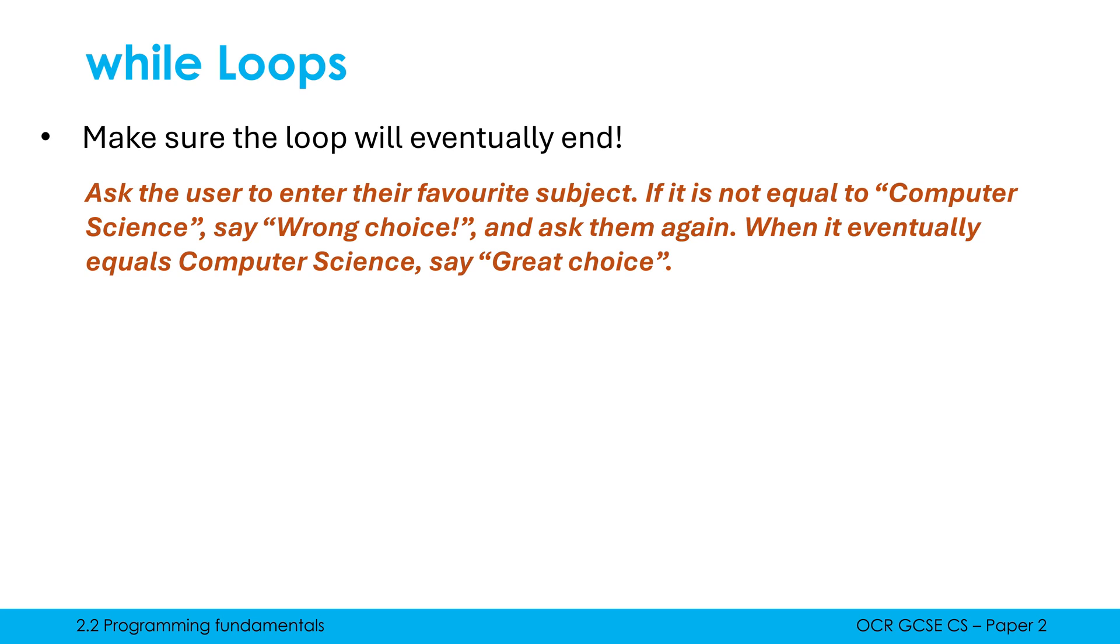So here is another question we're going to ask for you to enter the favorite subject. If it is not equal to computer science, we're going to say wrong choice and ask them again. When it is eventually equaling computer science, we say great choice. So again, part of the skill is trying to pick apart what we need to use based on our question. It does start by saying if it is not equal to. So you might be tempted to use an if statement, but here we have to use a while loop because we're going to ask them again and the word eventually implies that we're going to continually ask until they eventually type in computer science.